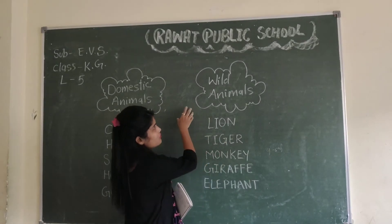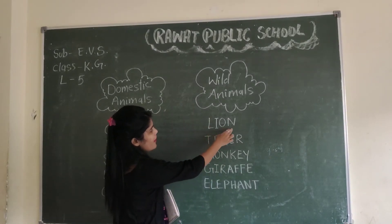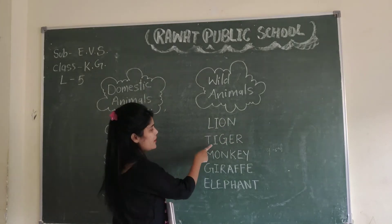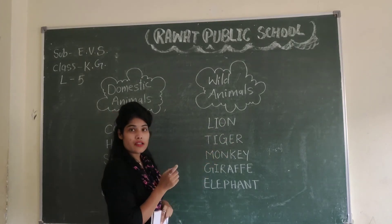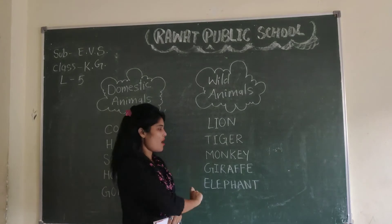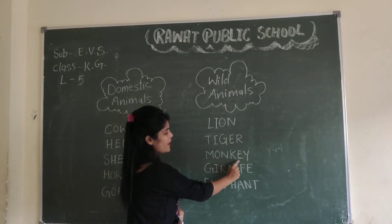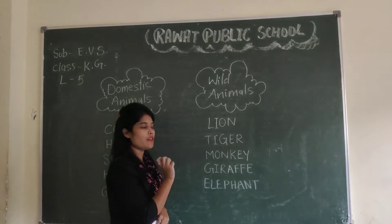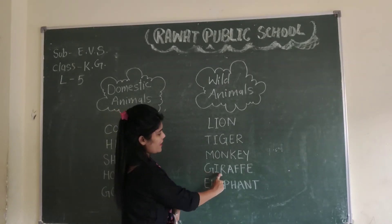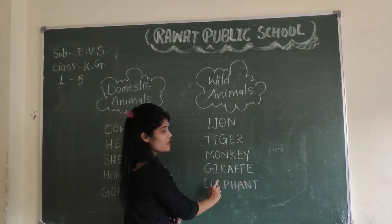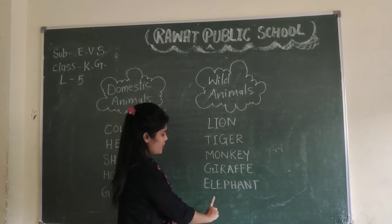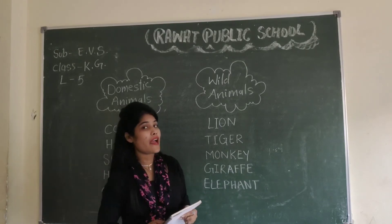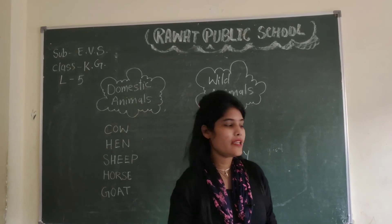Wild animals include L-I-O-N lion — lion means sher. T-I-G-E-R tiger — tiger means chita. M-O-N-K-E-Y monkey — monkey means bandar. G-I-R-A-F-F-E giraffe. E-L-E-P-H-A-N-T elephant — elephant means haathi.